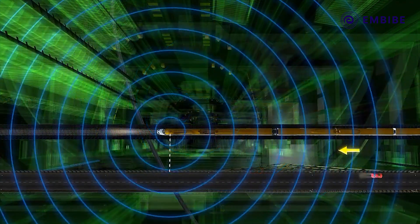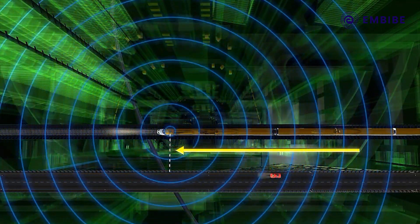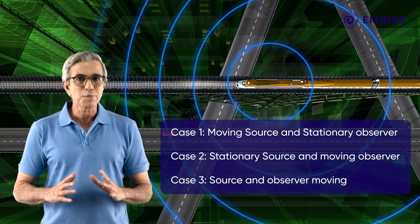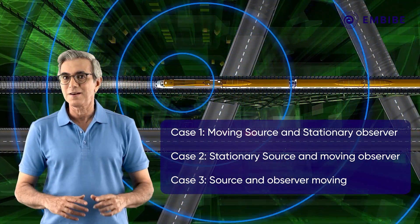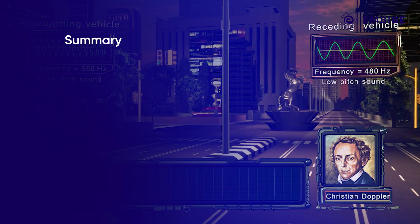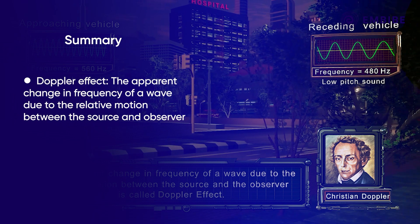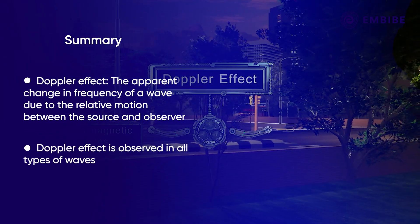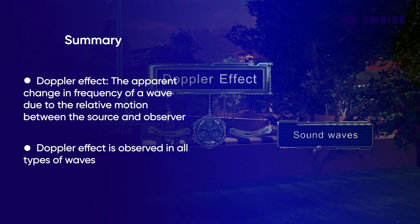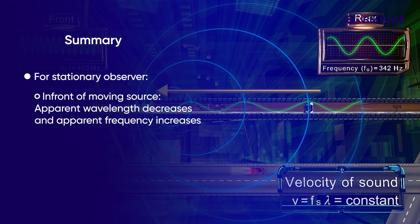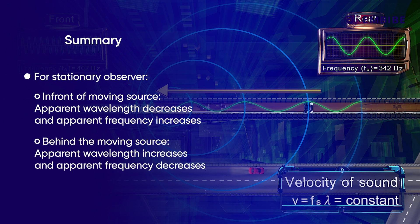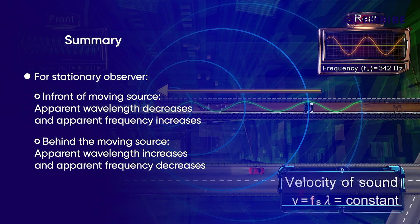The Doppler effect is also observed due to the motion of the observer, or both the source and observer moving. We shall discuss different cases in detail in our next topic. To summarize: the apparent change in frequency of a wave due to the relative motion between the source and the observer is called the Doppler effect. It is observed in all types of waves. When the source moves, the apparent wavelength decreases and frequency increases in the region ahead, while the apparent wavelength increases and frequency decreases in the region behind.